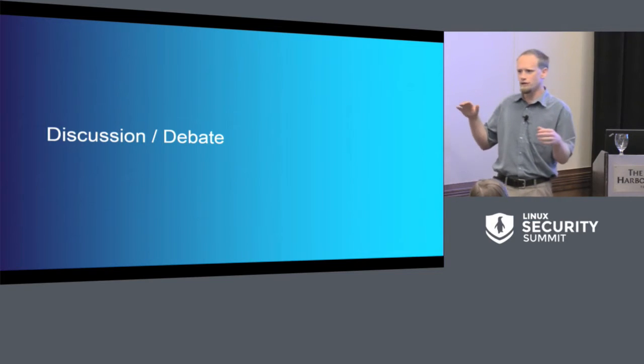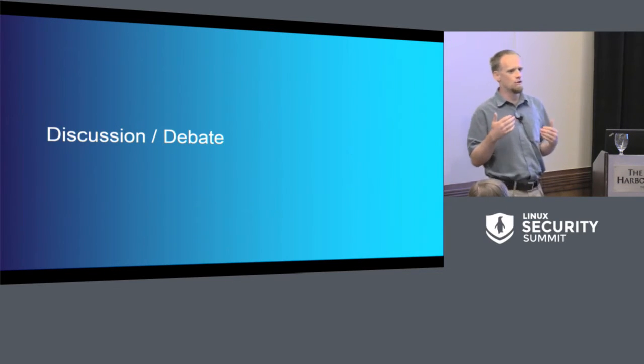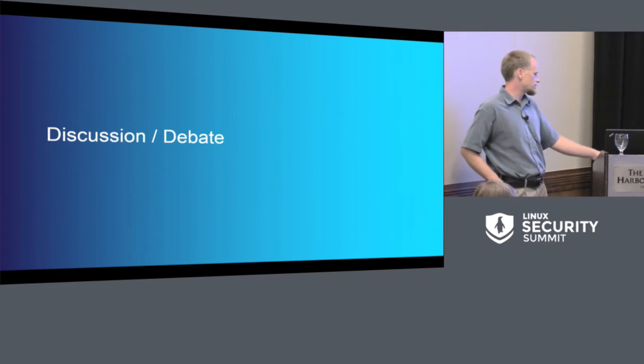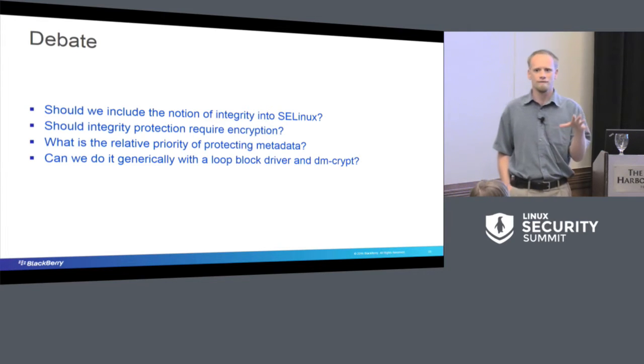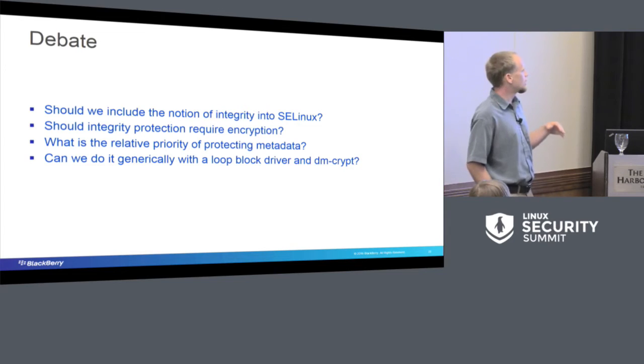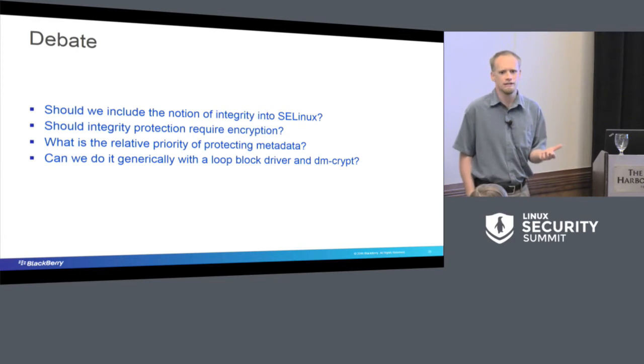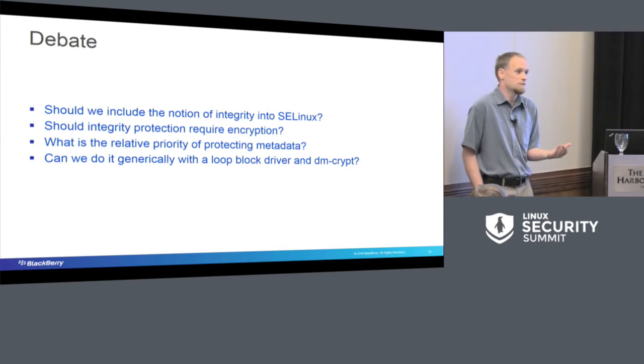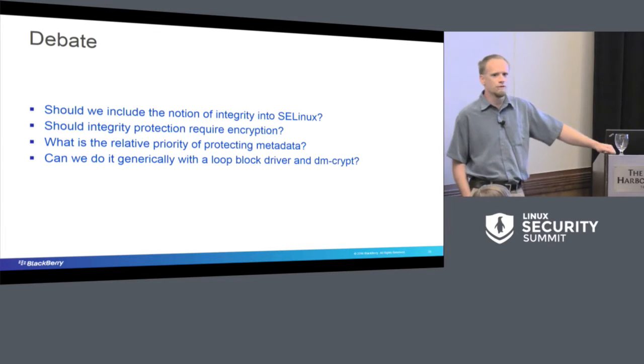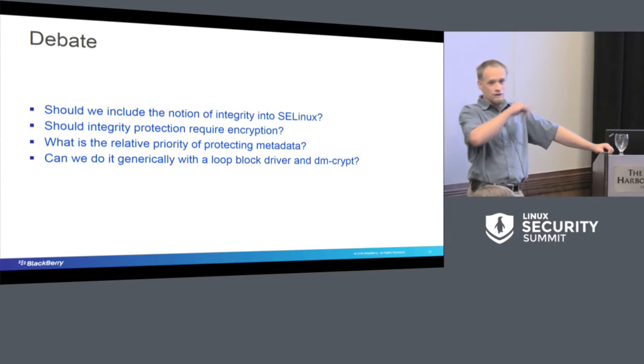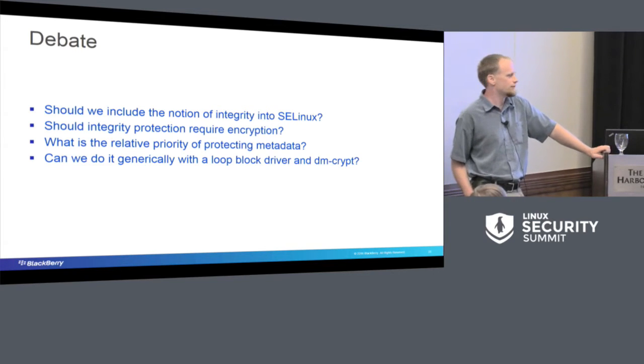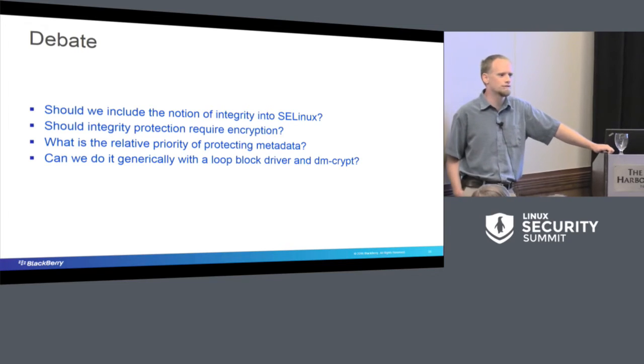So that's the general overview of the talk. And now I want to actually get into some of the discussion debate and I'm hoping that people in the room will be able to partake. I've got four questions here and I've got a slide on each but I'm not going to put the slide up on each unless we want the slide on each of them. So the first question, of course, is should we include the notion of integrity protection into an access control system such as SE Linux? I use SE Linux in this example because Android is tied to SE Linux, but it's equally applicable to SMAC, AppArmor or any of the other access control systems.